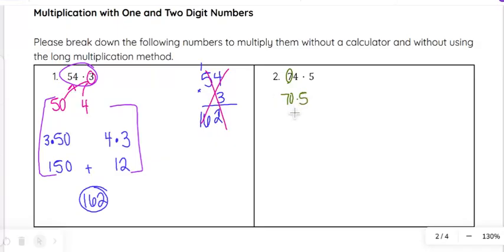And then 4 times 5 is 20. Add those together, 300, and then 50, and then 20. So 50 plus 20 is 70, so that's 370. That would be my answer on this one. Again, you can do the long multiplication, but sometimes it will save you a bit of time if you know how to do it in your head as opposed to the long multiplication method.